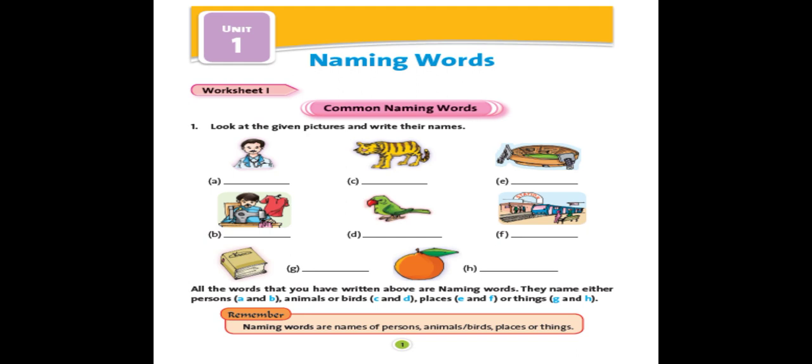I think all the words that you have written are naming words. They name either person. A and B are person. Birds, C and D are birds and animals. E and F are places. And G and H are things. So naming words are names of person, animals, birds, places or things.